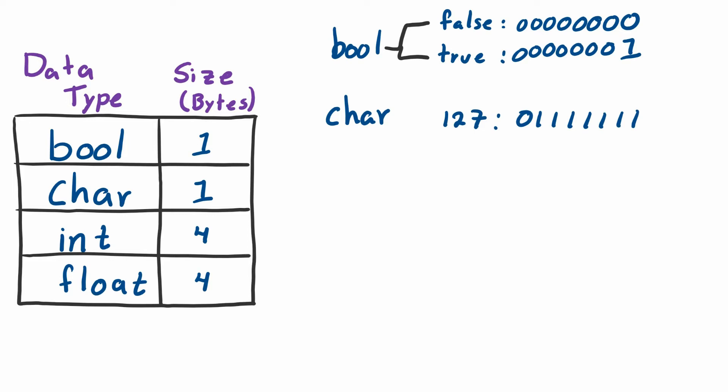Let's talk about integers. This is where it starts to get more interesting. Let's look at the value zero. The value zero is just zero, like with boolean. However, this has to be four bytes long, which means it has to be 32 bits, which means I need 32 zeros.